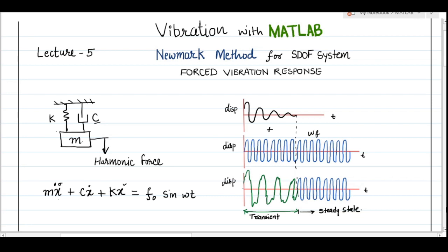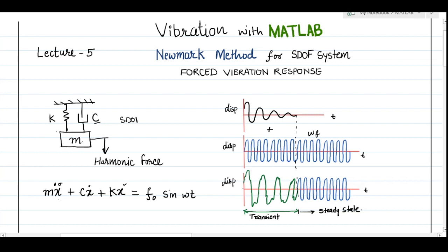In this lecture we are extending the same method to understand the forced vibration response using the Newmark method. This is a single degree of freedom system where I am applying a harmonic force. K is stiffness, C is damping, and M is mass. The equation of motion is: Mx double dot plus Cx dot plus Kx equals F0 sin(omega*t), where F0 is the amplitude of the harmonic force and omega is the frequency of harmonic excitation in radians per second.